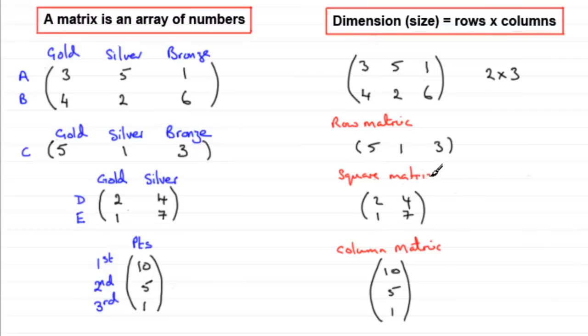So just to recap then, what would these dimensions be? For this one, it would be a one by three matrix, one row, three columns. The square matrix here would be a two by two, two rows, two columns. And finally, the column matrix here would be a three by one, three rows, one column.